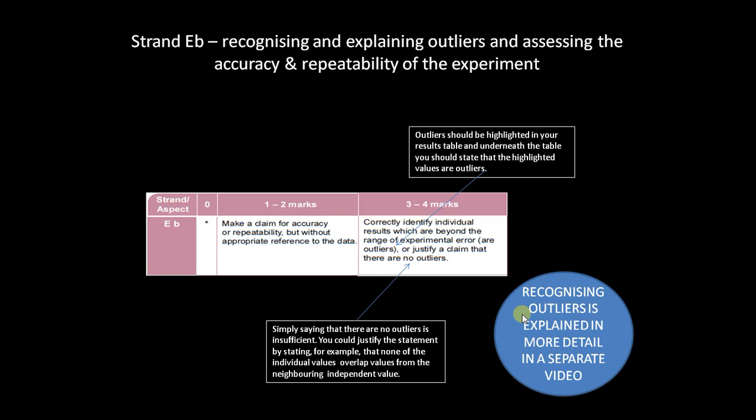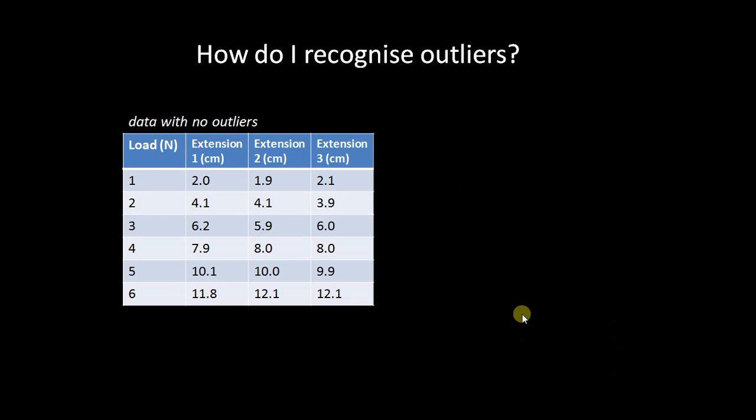Okay, more detail by the way is in a completely separate video, but if we look at an example of recognizing outliers, imagine an experiment where you have a spring and you're measuring the extension by adding different weights. Now if these are the results you've got, then what you've got here are some really very accurate results because if you look at all the individual values from the repeats for each load, none of these values overlap the neighbouring repeats from the next load above or the load below. So in this particular table you're quite right in justifying that there are no outliers.